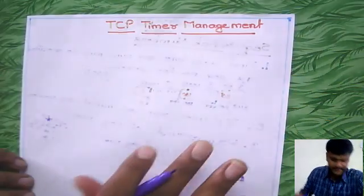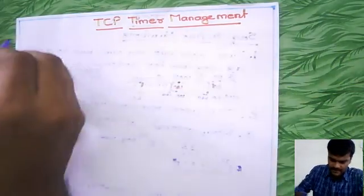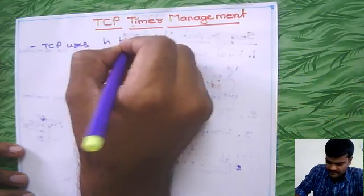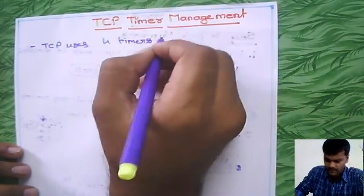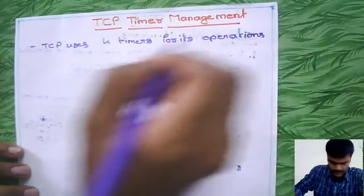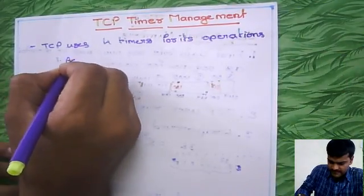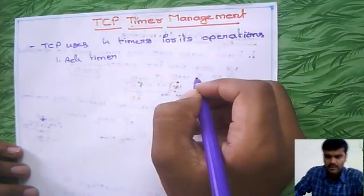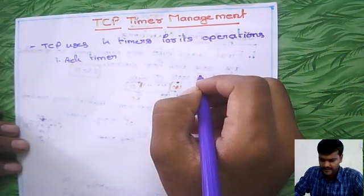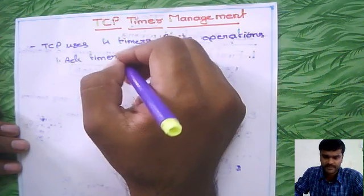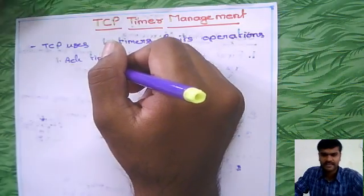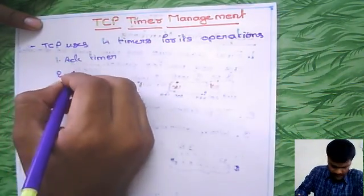Hello. The next one is TCP Timer Management. TCP uses four types of timers for its operations. The first one is Acknowledgement Timer. This is how much time we have to wait for the acknowledgement, and this is actually predefined. The first one is Acknowledgement Timer and the second one is Keep Alive Timer.